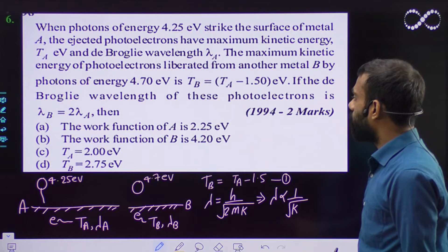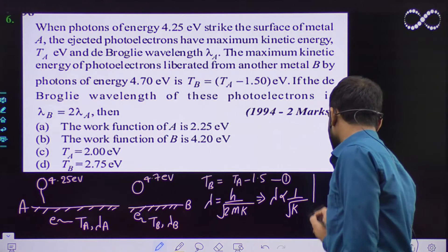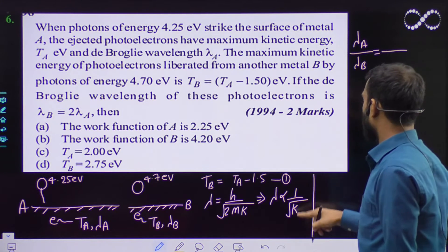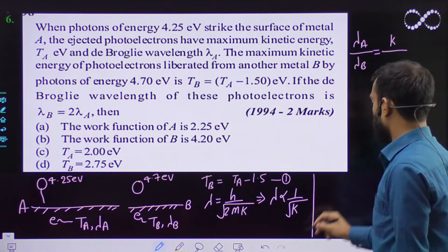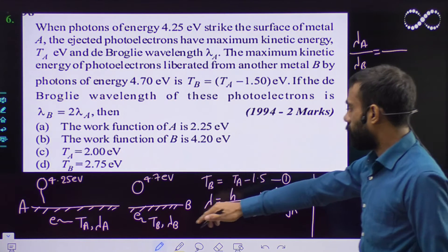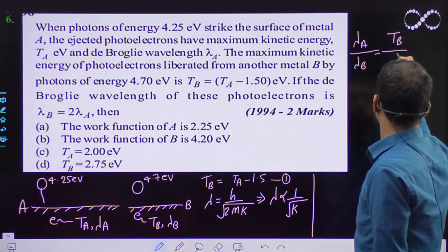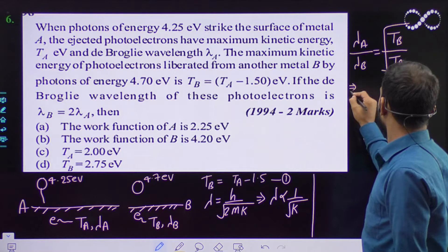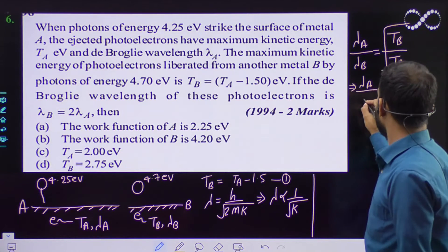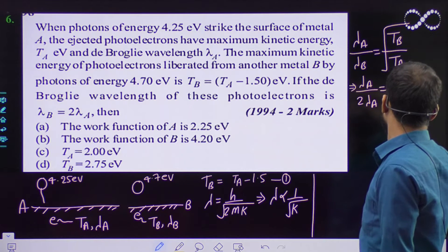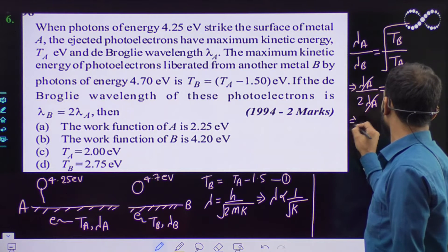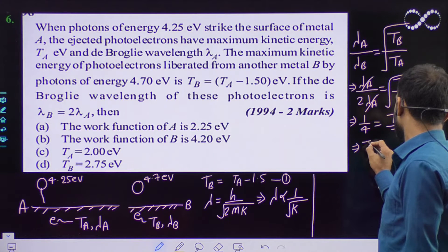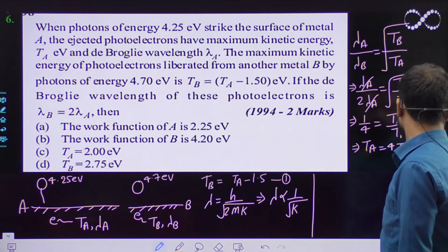It is also given in the question that λ_B = 2λ_A. From the de Broglie relation I can say λ_A / λ_B = √(T_B / T_A). Now λ_B = 2λ_A, so substituting: λ_A / (2λ_A) = √(T_B / T_A), which gives 1/2 = √(T_B / T_A). Squaring both sides: 1/4 = T_B / T_A, so T_A = 4T_B. Let us call this equation 2.